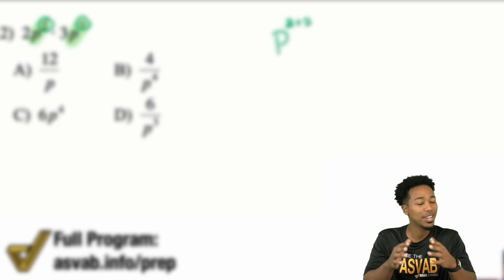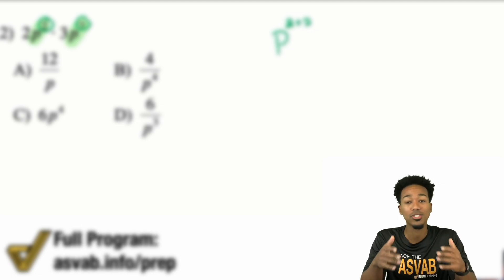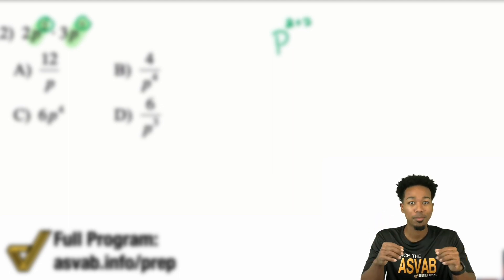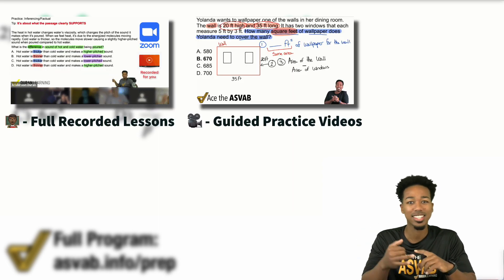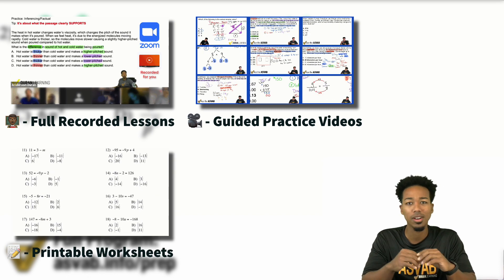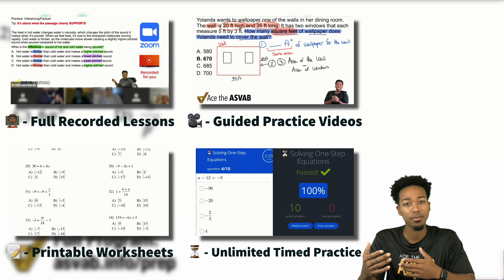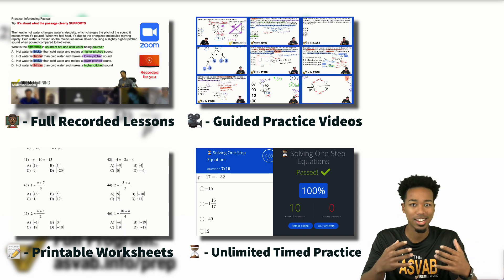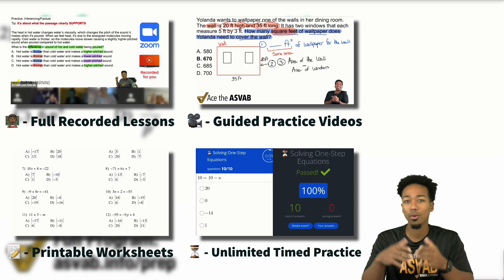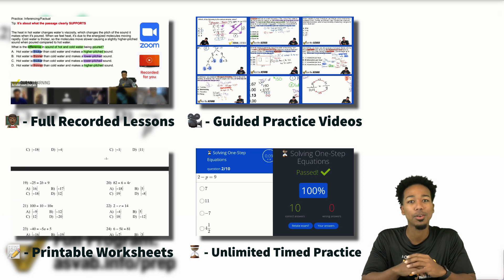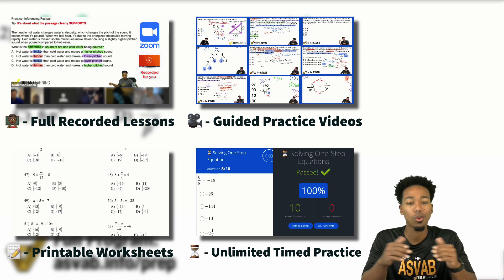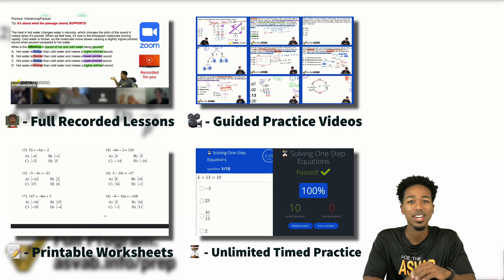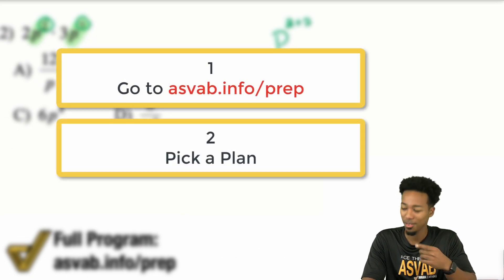Before we continue — I know you're enjoying this and you can have thousands of problems just like this in our program. In our program, you have four main things: recorded lessons, guided practice just like this, worksheets you can print or keep online, and speed drills to raise your confidence. When you take the test, there's no test anxiety because you've been timed before and you know what to do. All of that is included in our program and more — click the link in the video or description to learn about it.